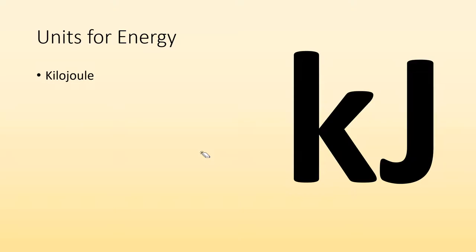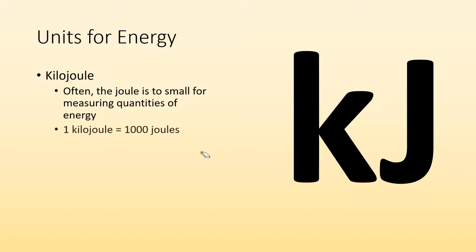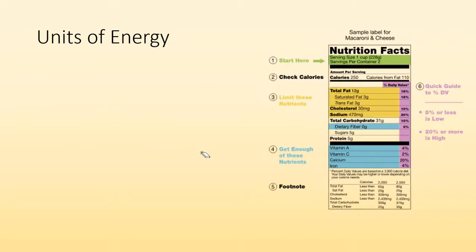More often than not, though, we'll probably be working with the kilojoule. So kilo means a thousand. A joule typically is too small for measuring quantities of energy that you're working with more often than not. So one kilojoule is equal to a thousand joules.